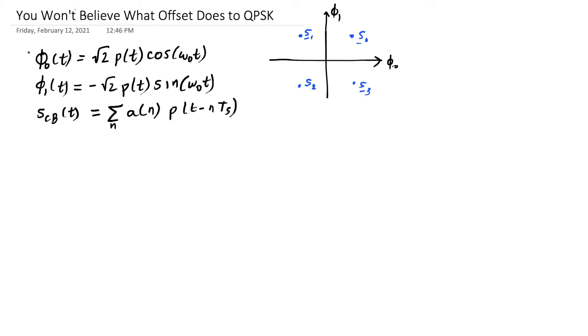We've already mentioned that it has these two basis functions, and it has a complex baseband representation where we amplitude modulate different pulses that are integer multiples of t_s apart. And those amplitudes come from the complex plane that has phi_0 on the real axis and phi_1 on the imaginary axis, and we have four possible constellation points in QPSK.